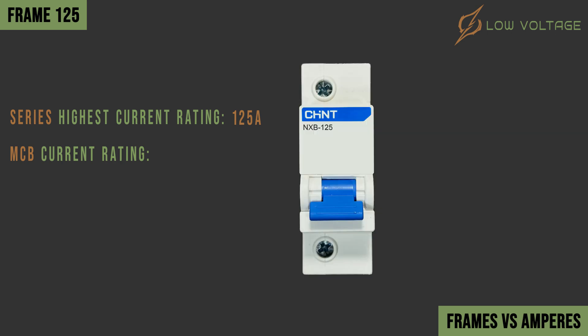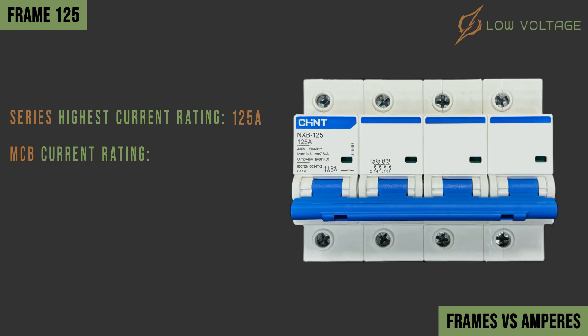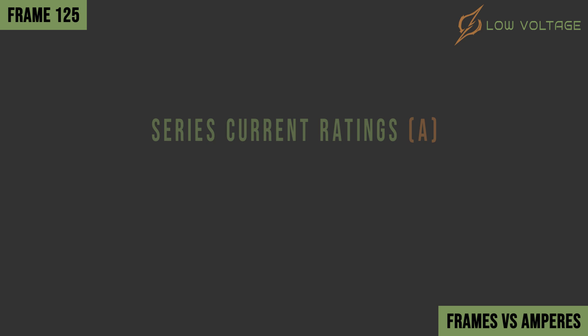Another example of a breaker within the same 125 amperes frame, but with a different rating: this MCB has a current rating of 63 amperes. The last example is also a breaker within the same frame, having a current rating of 125 amperes. Frame 125 can have current ratings between 10 amperes reaching a maximum rating of 125 amperes, and these ratings can vary between manufacturers.